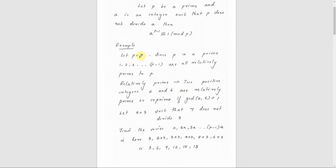We consider 2 and 7, GCD will be 1. Similarly, 3 and 7, 4 and 7, 5 and 7, 6 and 7 — all these pairs have GCD equal to 1. We can say that they are all 1, meaning they are all relatively prime.